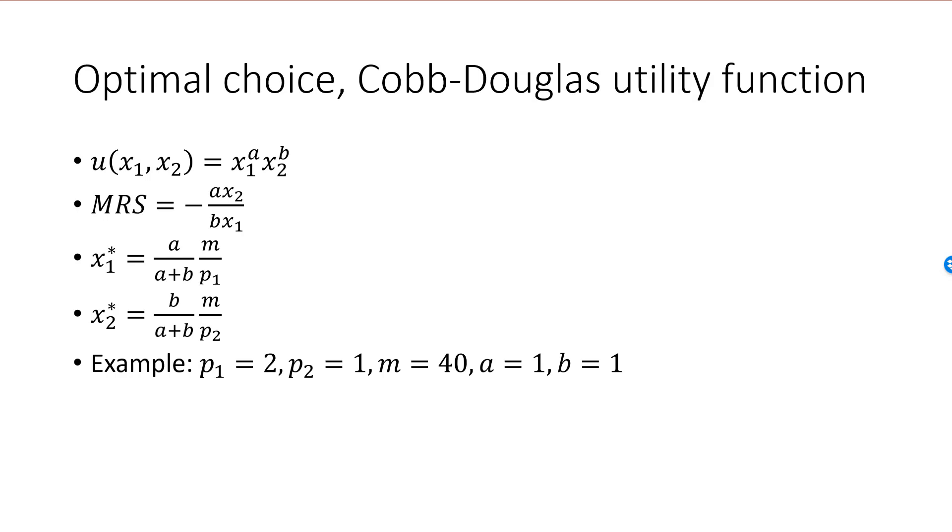For example, if p1 is 2, p2 is 1, m is 40, a is 1, and b is 1, then x1 star is one half times 40 over 2, which is 10, and x2 star is 20.